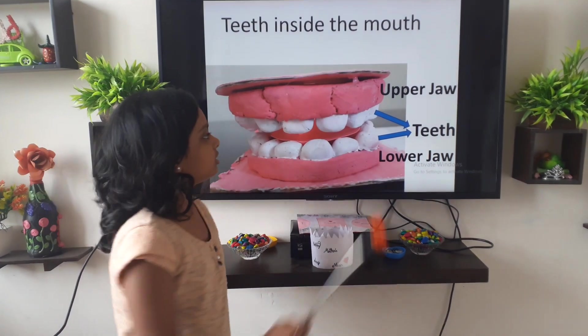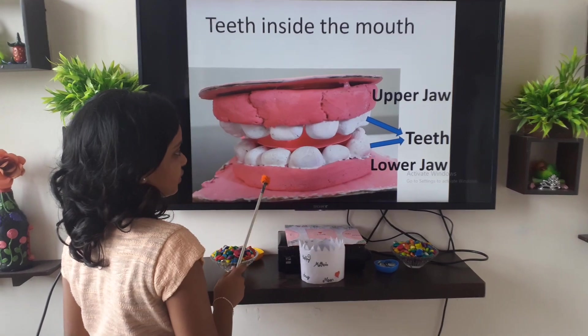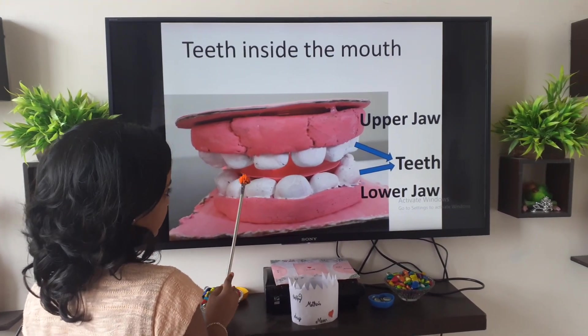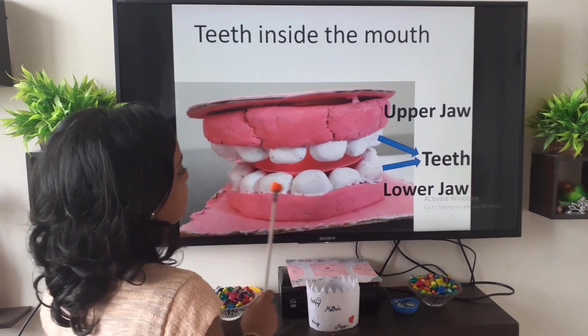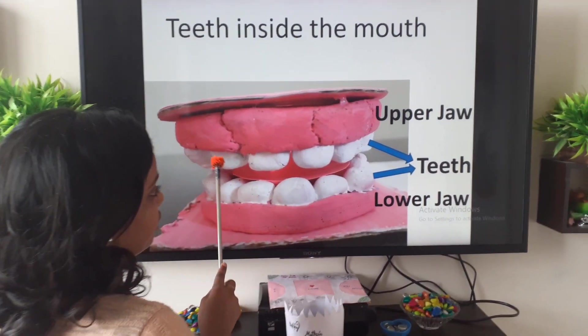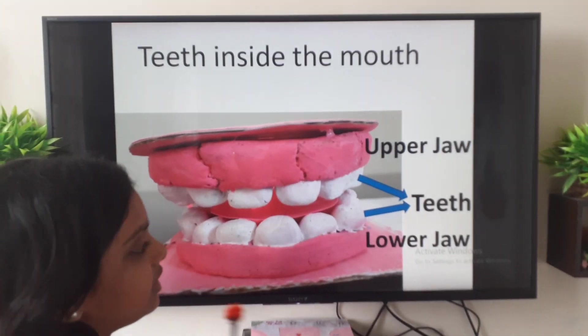This is the upper jaw and this is the lower jaw. This pink color is the tongue. These white structures are teeth.